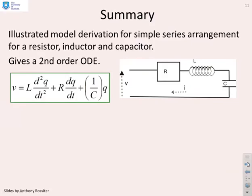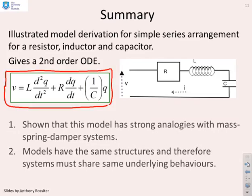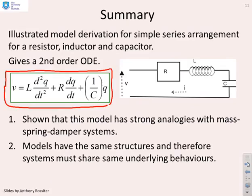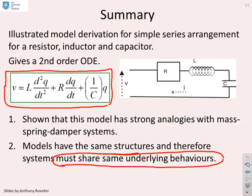In summary, we've illustrated the model derivation for a simple series RLC circuit, yielding a second-order differential equation expressed in terms of charge. We've shown the model has strong analogies with mass-spring-damper systems because both models share the same structure and therefore the same underlying behaviours. This is particularly helpful: if you have an intuition for mechanical systems, you can use that same mindset to understand electrical systems, and vice versa.